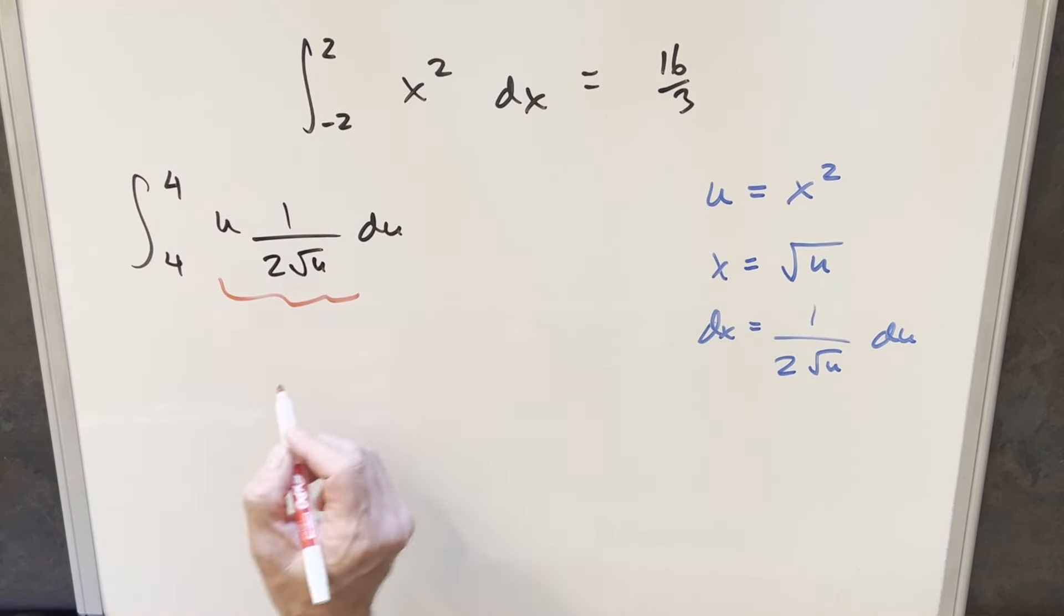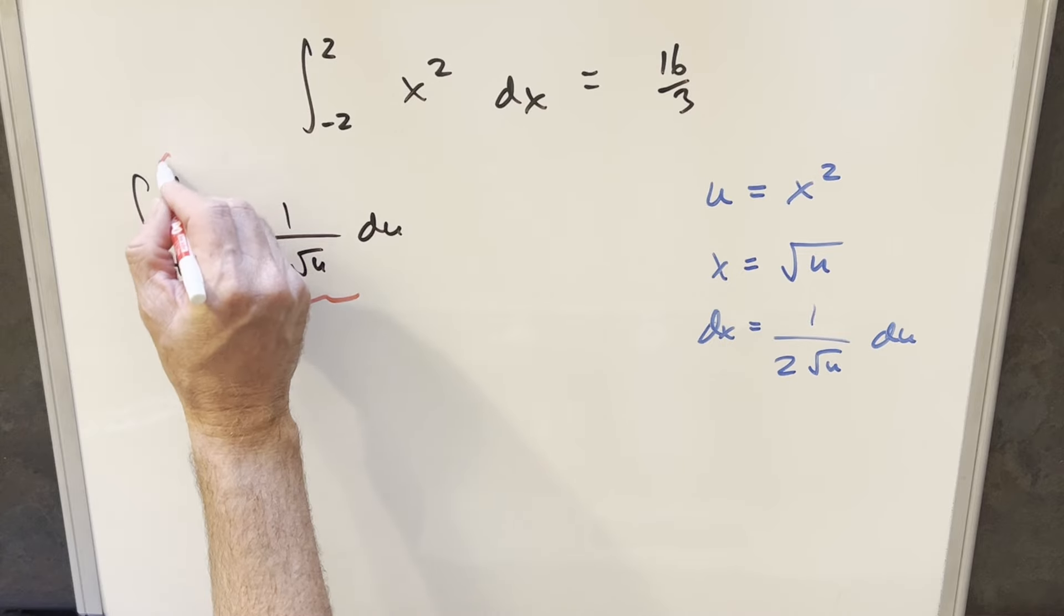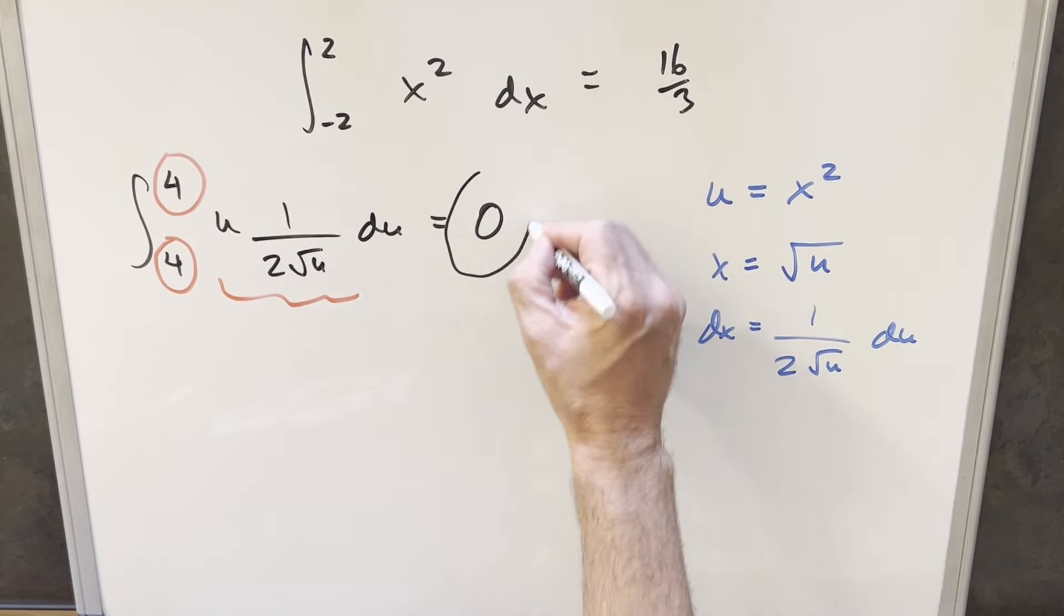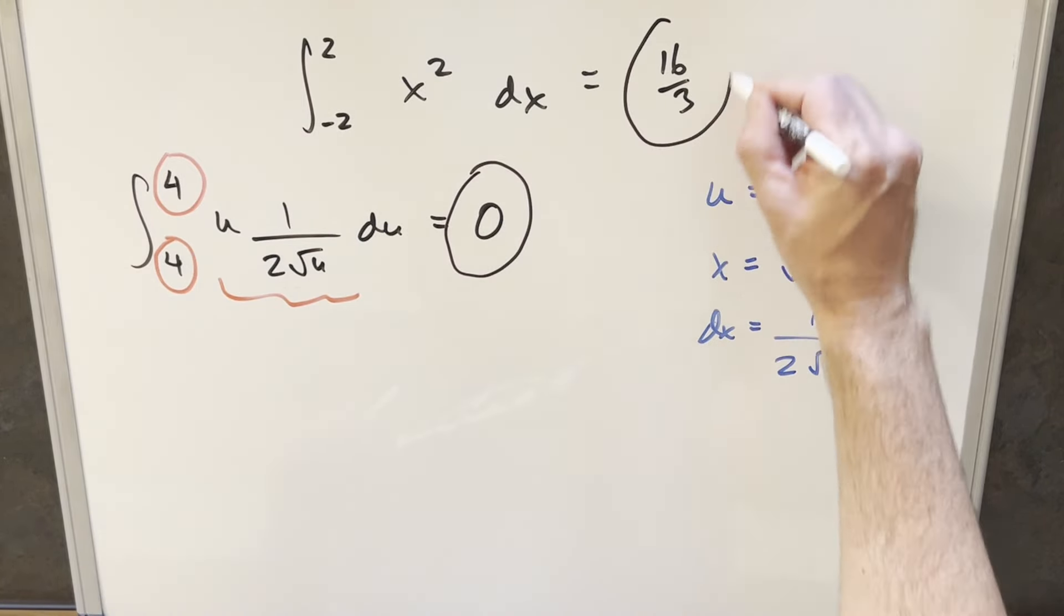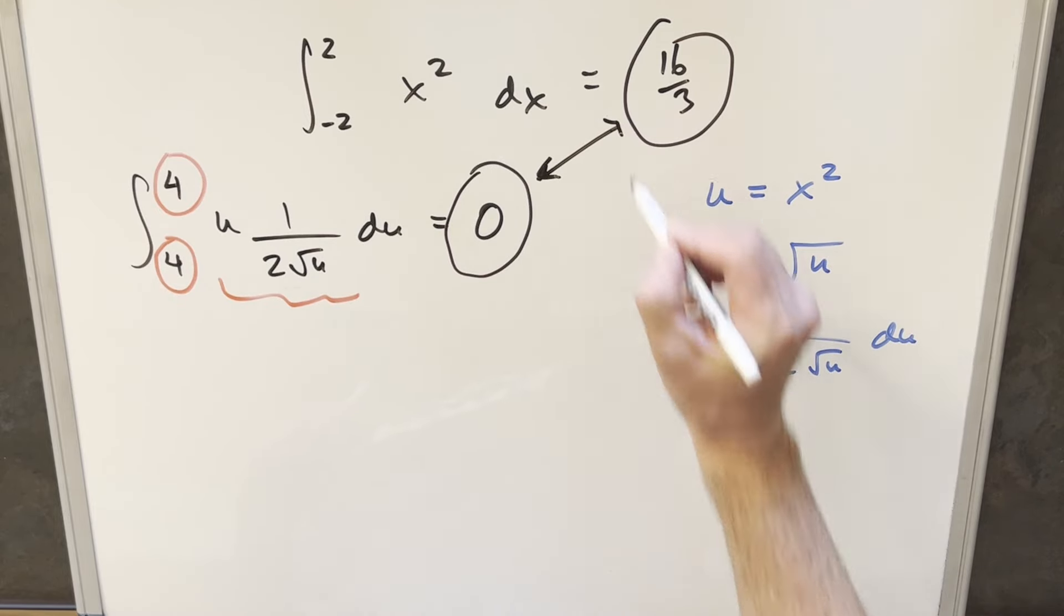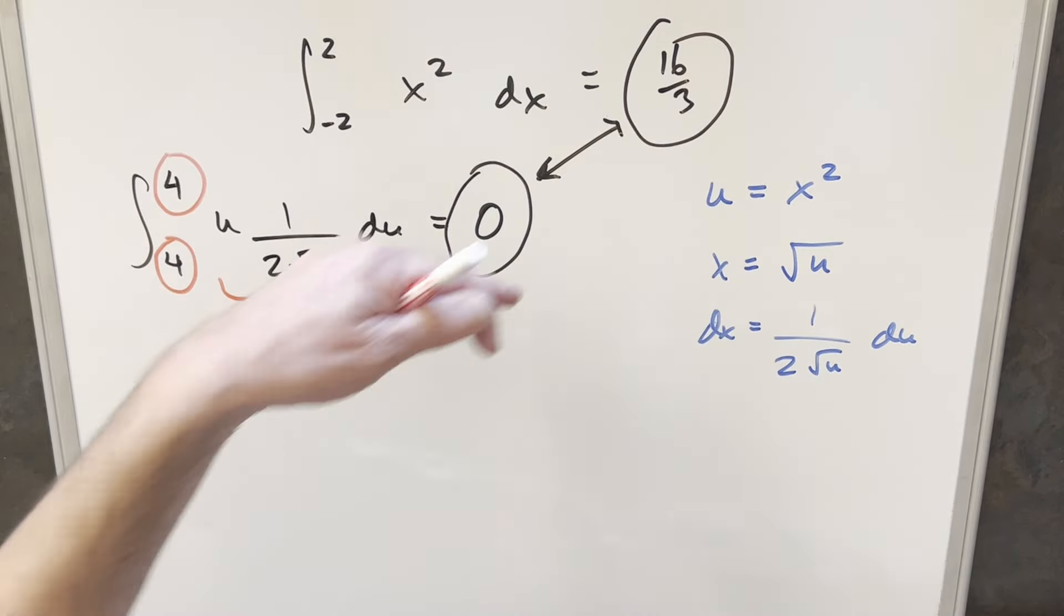And then next I could go ahead and simplify this if I wanted to. But it's not really necessary because you'll notice here, if we've got the same bounds 4 to 4, the whole integral has to be 0. And so we get our solution and this is just 0. And that's fine. That's quick and easy. But the only thing is it doesn't match our first solution. 0 is definitely not 16 over 3. So what went wrong and which answer is right?